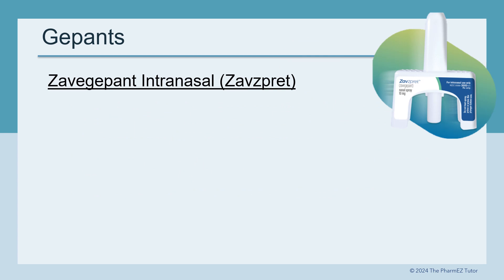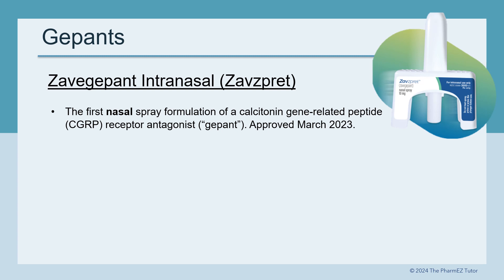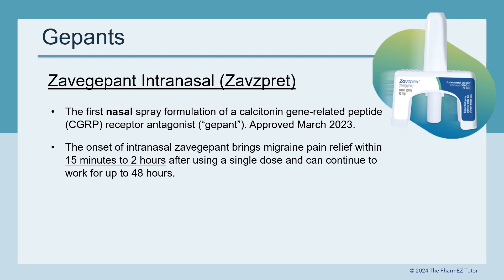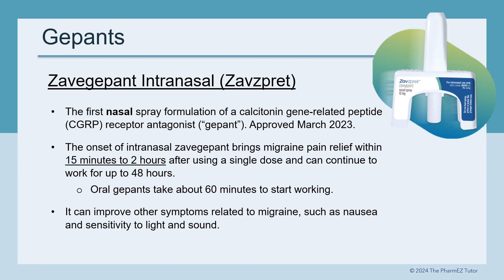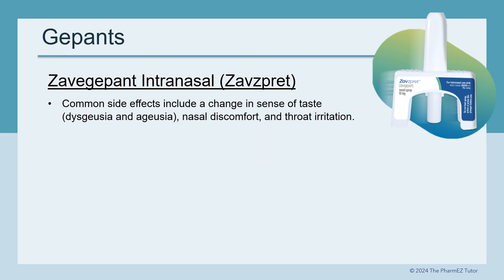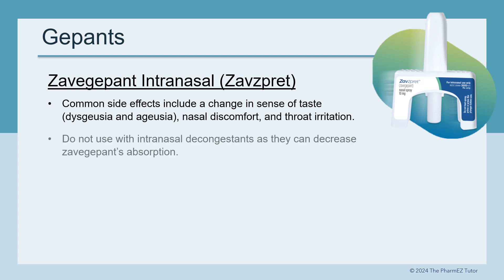Let's go in depth with more information on the nasal G-PAN product, Zavegepant or Zavspret. It's the first nasal spray formulation of a CGRP receptor antagonist, or G-PAN, approved in March 2023. The onset of intranasal Zavegepant brings migraine pain relief within 15 minutes to 2 hours after a single dose, and can continue to work for up to 48 hours — compared to about 60 minutes for oral G-PANs. It can also improve other symptoms such as nausea and sensitivity to light and sound. Common side effects include a change in sense of taste (dysgeusia and ageusia), nasal discomfort, and throat irritation. Do not use with intranasal decongestants, as they can decrease Zavegepant's absorption.